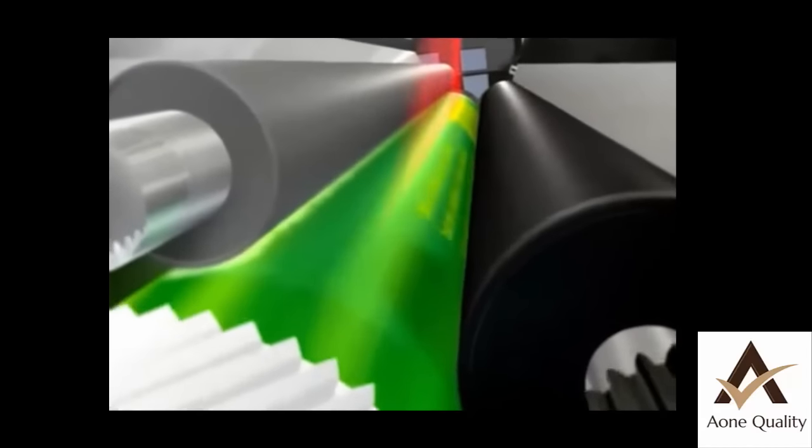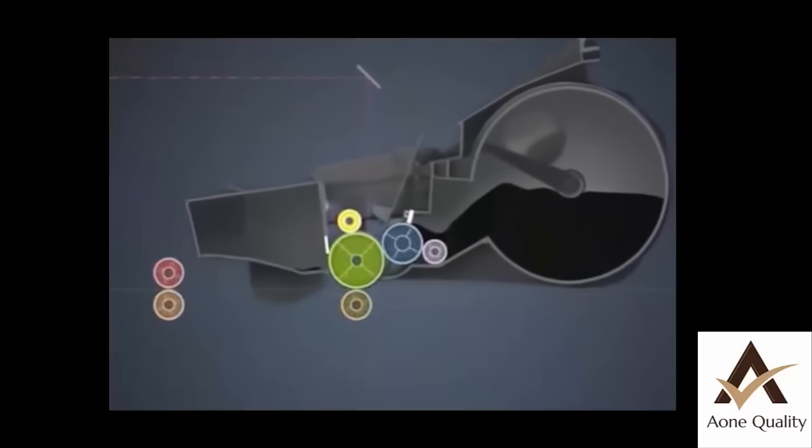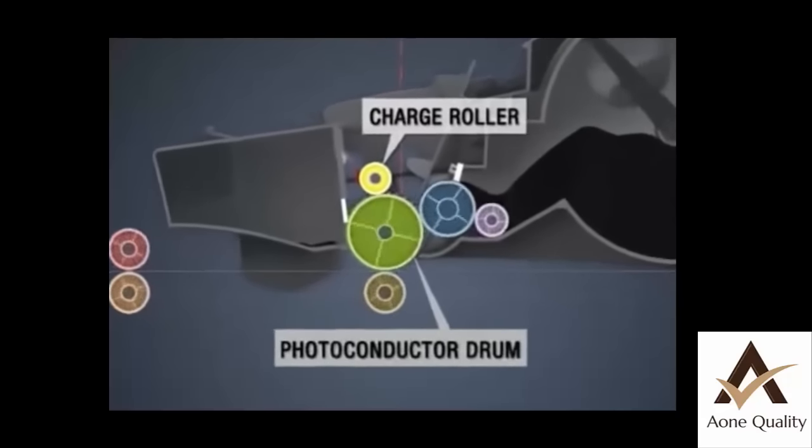Lexmark Laser Technology uses an electrophotographic process to transfer digital data to paper. The process begins with the charge roller, which applies a uniform charge to the surface of the photoconductor drum.